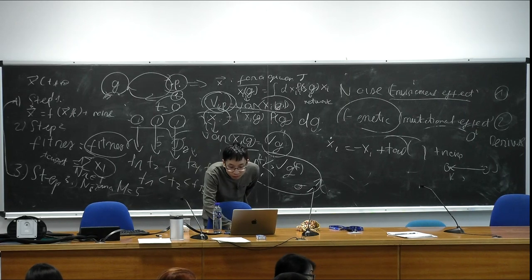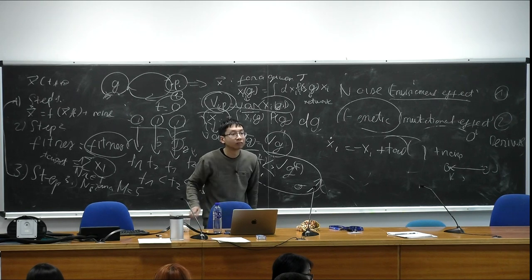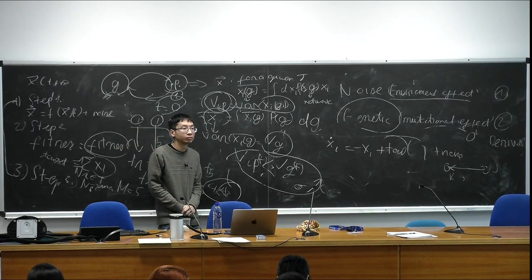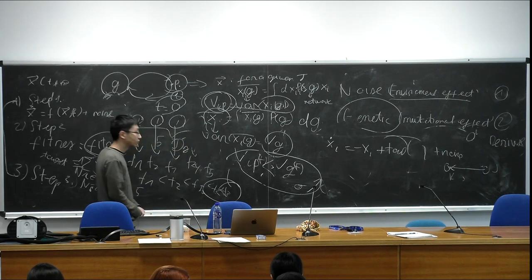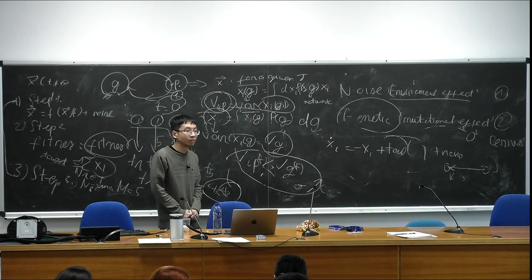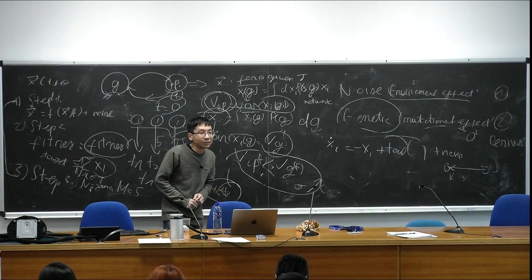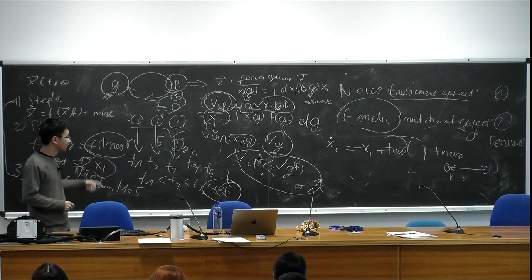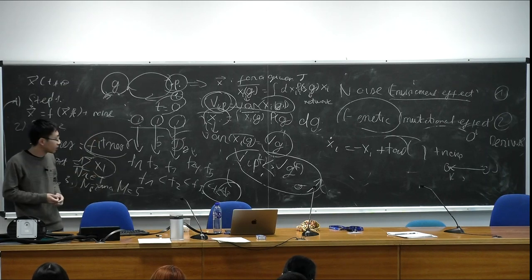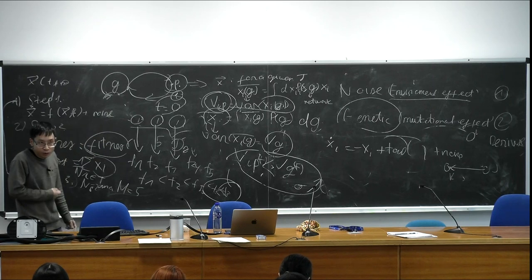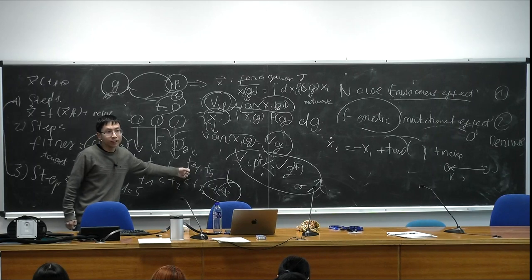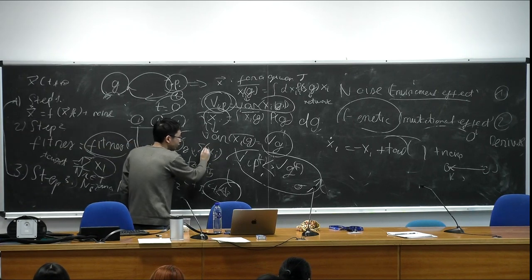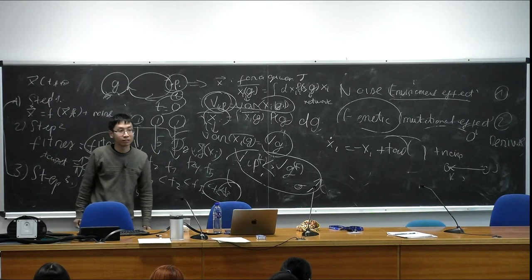Q&A: Do these results hold if you change the fitness function? Yes — it turns out that any monotonically increasing function of x will produce the same behavior. Whether you sum x_i directly or use f(x_i) for any monotonically increasing f, you will have the same qualitative result. However, if you take a parabolic or some non-monotonic function, the behavior may disappear.